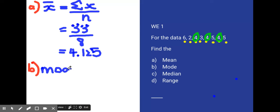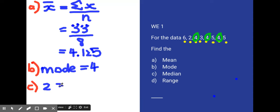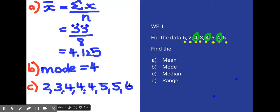To find the median, I need to put the numbers in order from lowest to highest: 2, 3, 4, 4, 4, 5, 5, 6. With a small group, we can clearly see where the middle of our data is.